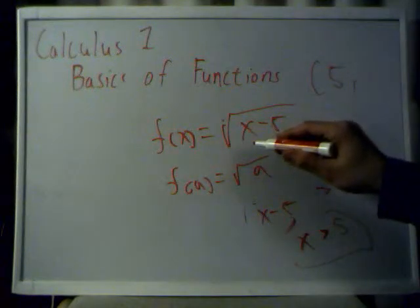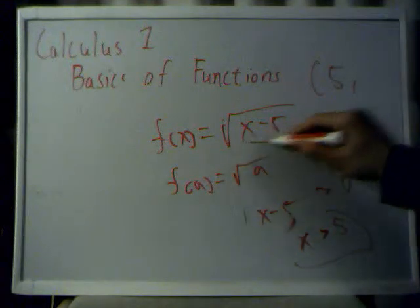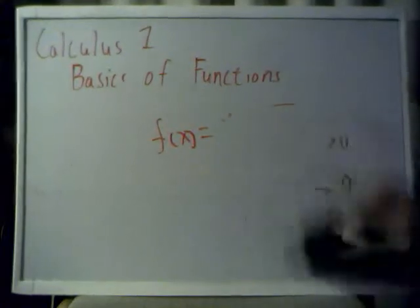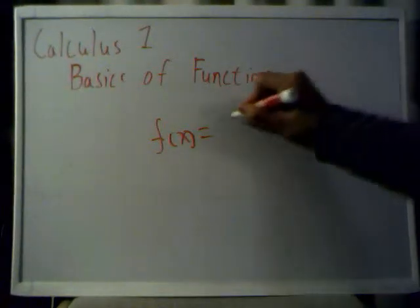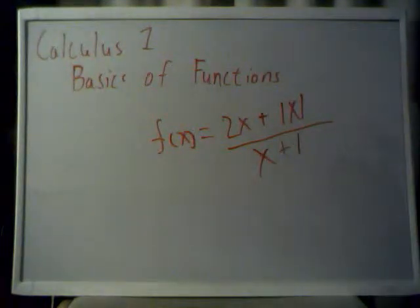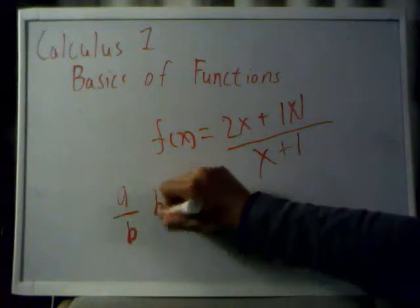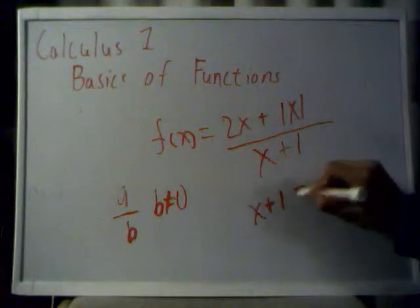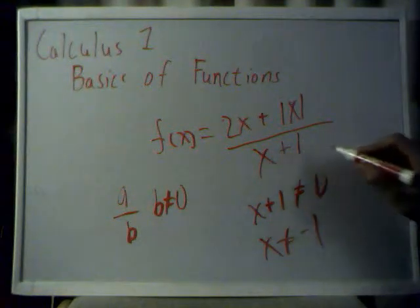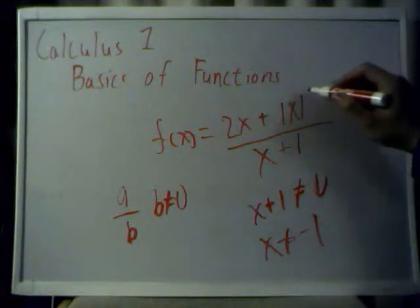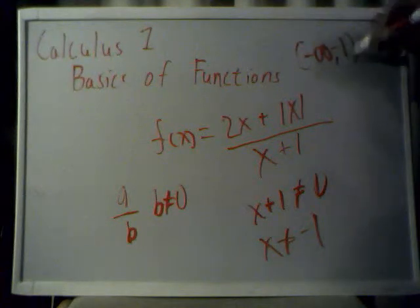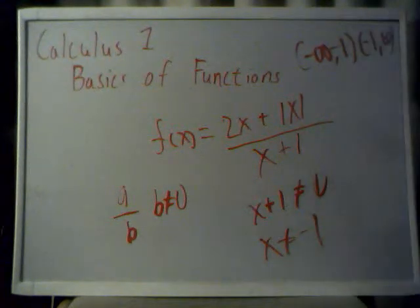There is no upper bound because x can be as large as it wants and this will still be positive, so your upper bound will be positive infinity. Let's do another example: 2x plus the absolute value of x, all over x plus 1. This is the case where it's a over b, and b cannot equal 0, so it follows that x plus 1 cannot equal 0. Therefore, x cannot equal negative 1. It can be anything else and this will not equal 0. So your domain is anything except for negative 1.